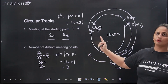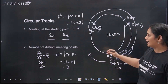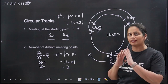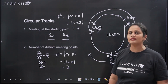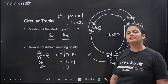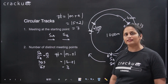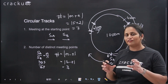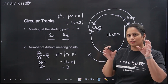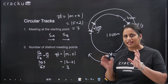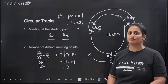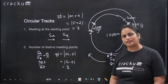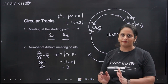In summary, for circular tracks: if runners move in the same direction, take the ratio of their speeds reduced to lowest form M/N, and the number of distinct meeting points is |M − N|. If they are running in opposite directions, the number of meeting points is M + N.